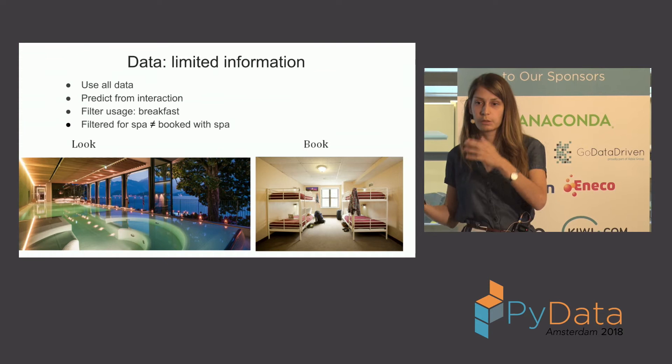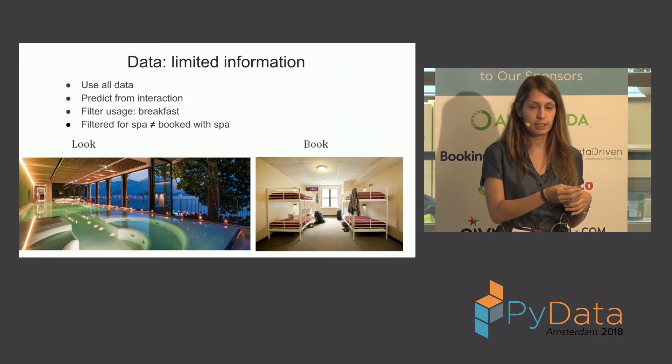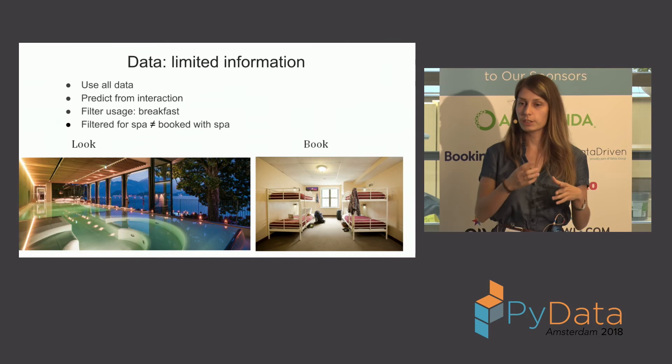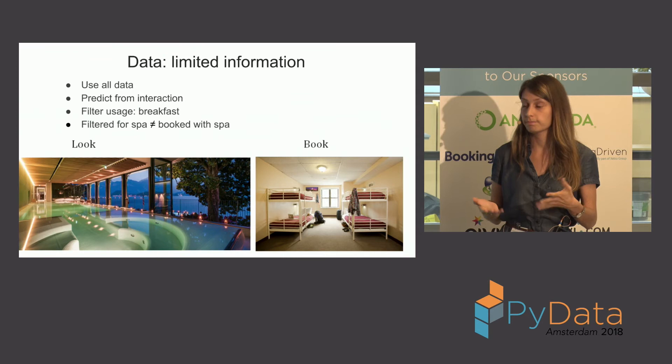Sometimes you can work with data where you only assume you know the labels based on some condition. You can also look at the problem from the other side: identify user intent from other interactions. For example, filters that users click — if a user clicks a filter saying they want breakfast, that's exactly their intent, and we don't need to limit ourselves to only users who made a booking.